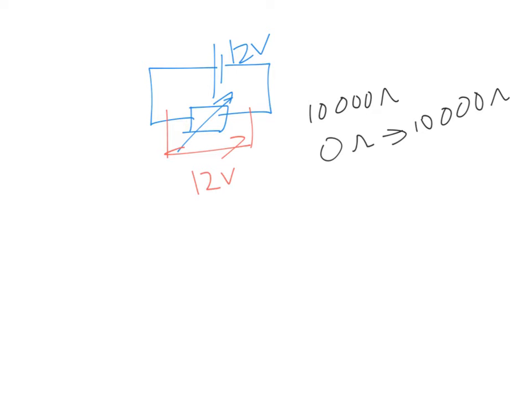If you want a fraction of these 12 volts EMF, we need to divide up these 12 volts to two or more resistors in series.